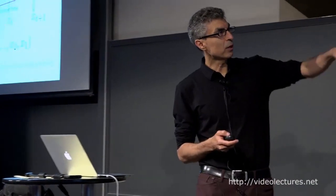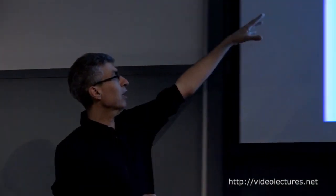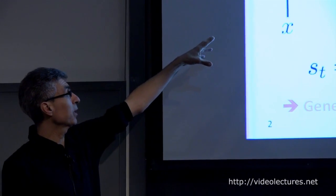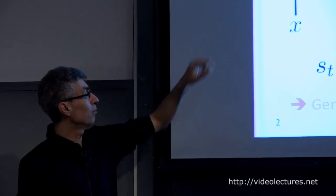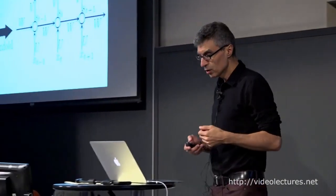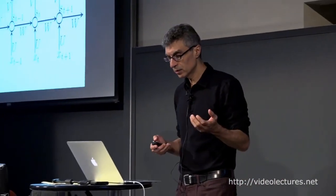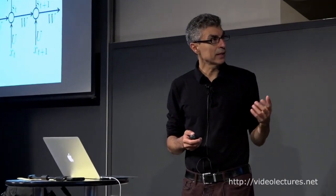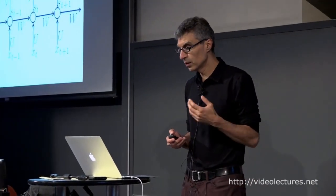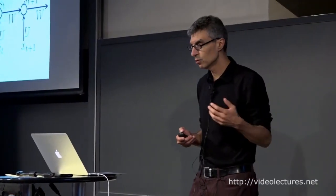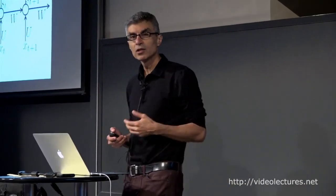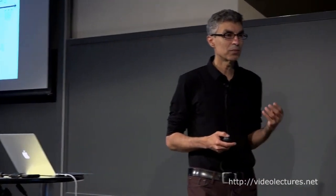We can write it compactly with a circuit diagram inspired from electrical engineering, where we use a little black box to indicate a delay of one time step between the update of the state and the previous state. If we add outputs that depend on the current state, we get a graph that can be used to map a sequence of inputs to a sequence of outputs of the same length. These were the kinds of recurrent nets I was working with during my PhD in the late 80s.